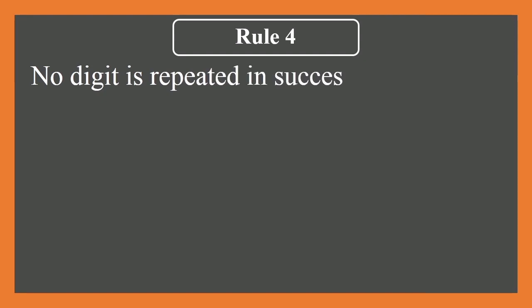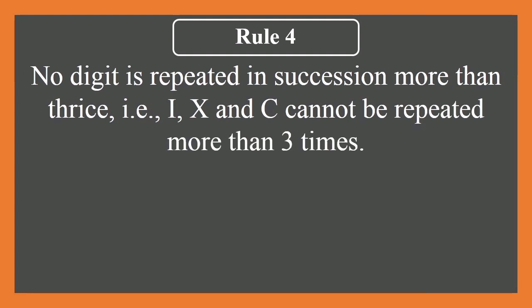Let us go to the next rule, that is rule number four. Rule number four is regarding repetition of the digit. No digit is repeated in succession more than three times. So it means IIII four times does not mean 4, or four times C does not mean 400, or even though XXXX does not mean 40. So keep in mind the Roman symbol is not represented more than three times.